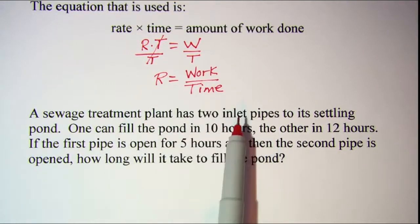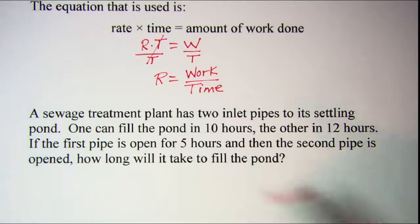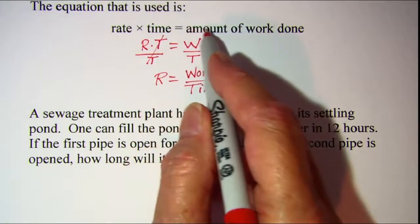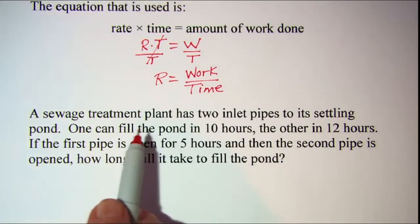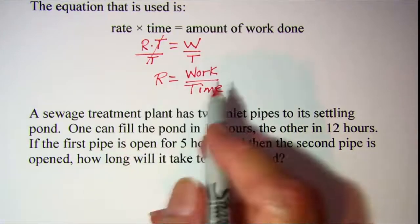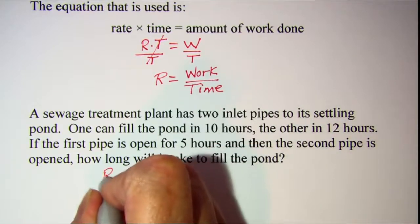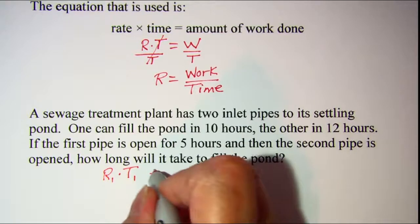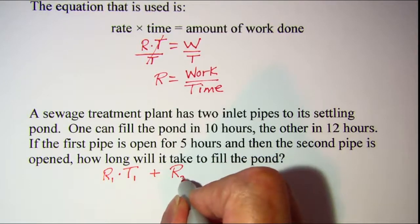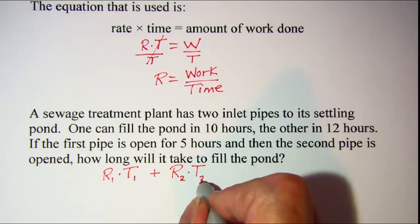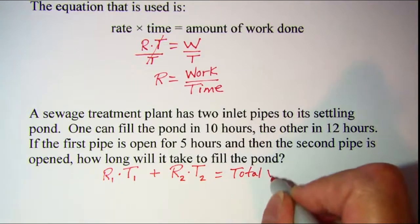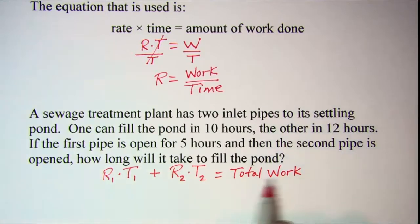So we have two pipes that we need to consider. We're going to take the rate times the time for the first pipe, and that will give us the amount of filling it does, and then we'll do the same thing for the second pipe. So the rate times the time for pipe 1 plus the rate for pipe 2 times the time for pipe 2 gives us the total work, and by total work I mean the amount of the pond that's being filled total.